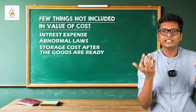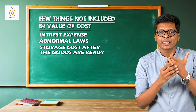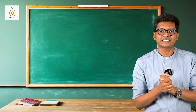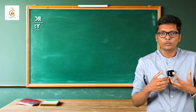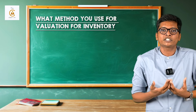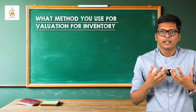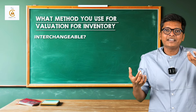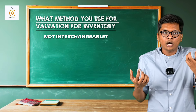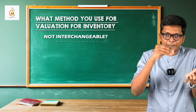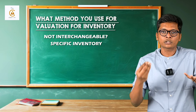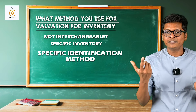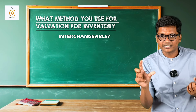AS2 also says a few things are not included in the value of cost: interest expense is not included, subject to AS16; abnormal loss will not be included; and storage cost after the goods are ready — keeping them in the warehouse after the goods are ready as finished goods — these costs are also not included in AS2 cost of inventory.